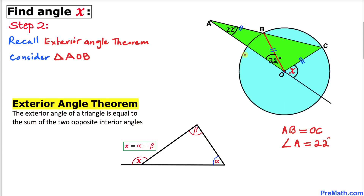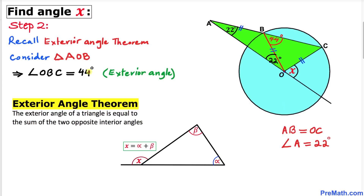Focusing on triangle AOB once again, angle OBC is the exterior angle, and it equals the sum of the two opposite interior angles — 22 degrees plus 22 degrees — so angle OBC turns out to be 44 degrees.